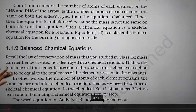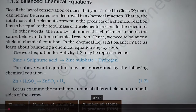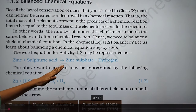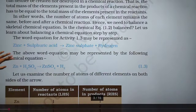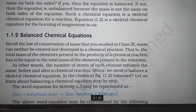Recall the Law of Conservation of Mass that you studied in Class 9: mass can neither be created nor destroyed in a chemical reaction. The total mass of the elements present in the products of a chemical reaction must be equal to the total mass of the elements present in the reactants.